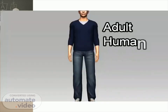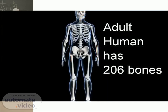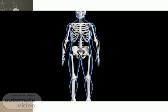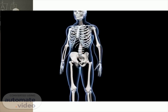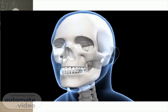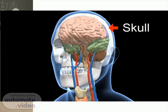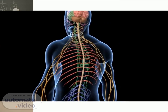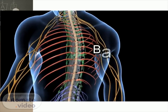An adult human being has 206 bones in his body. Hard and strong bones surround delicate vital organs and protect them. Our heart and lungs are protected by a cage made of bones called the rib cage. Our brain sits inside the hard skull made of strong bones.